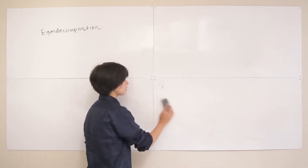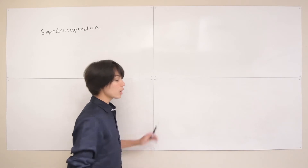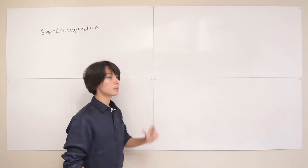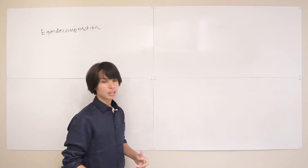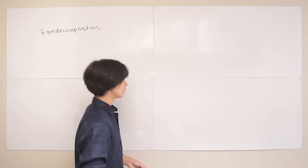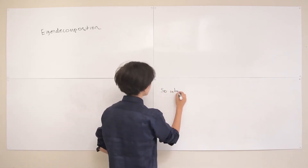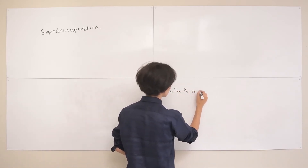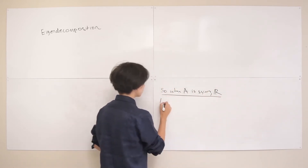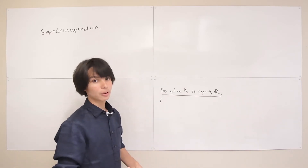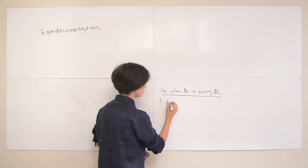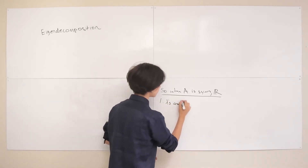Let's cover one thing that might have been glossed over in the last lecture — why we like our matrix A to be symmetric and real-valued. When A is a symmetric and real-valued matrix, three properties are guaranteed that make eigenthings quite easy to deal with. The first is that our eigenvalues are guaranteed to be real-numbered, which makes calculations easier.